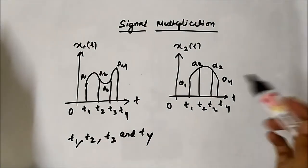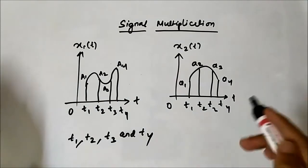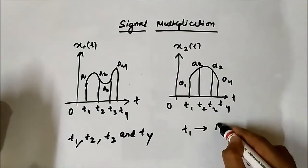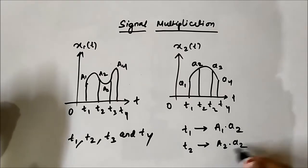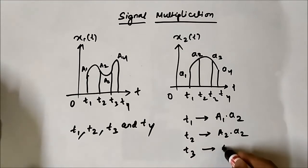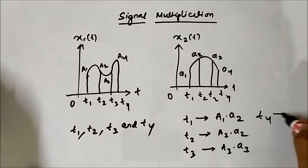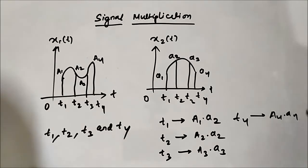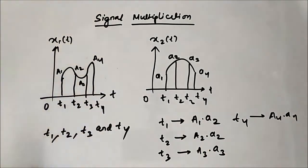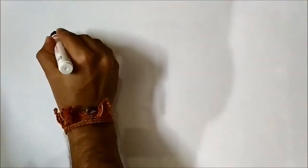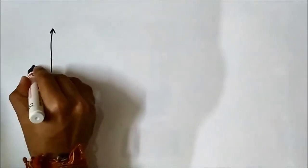Like we did in signal addition where we added the values, in signal multiplication we take the product of the respective amplitude values at each time instance. This is the basic concept of signal multiplication. Now let us understand it with the help of some examples. We will perform signal multiplication on some basic test signals. Let us take a unit step signal.